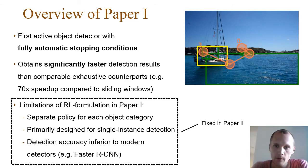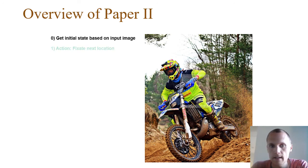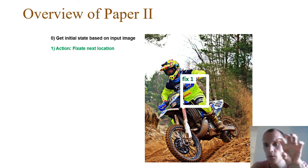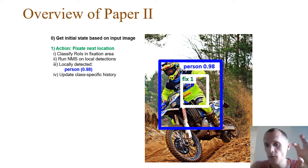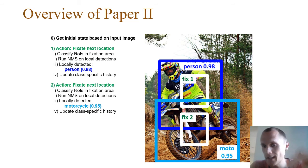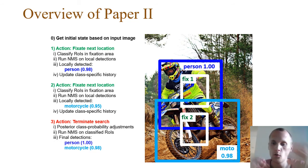The detection accuracy of the first model is not as good as modern detectors such as Faster R-CNN. The second paper builds on the first and tries to improve it. An example shows the model's operation: first, deep features are computed and the first fixation is made close to a person on a motorcycle. Locally, it finds the person. The model maintains a history of what it has seen, guiding it to look slightly below to detect the motorcycle. The process repeats until the model automatically decides to terminate, then makes fine adjustments to the detections.